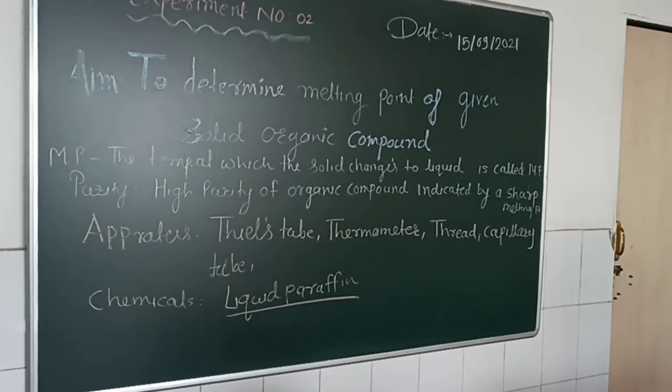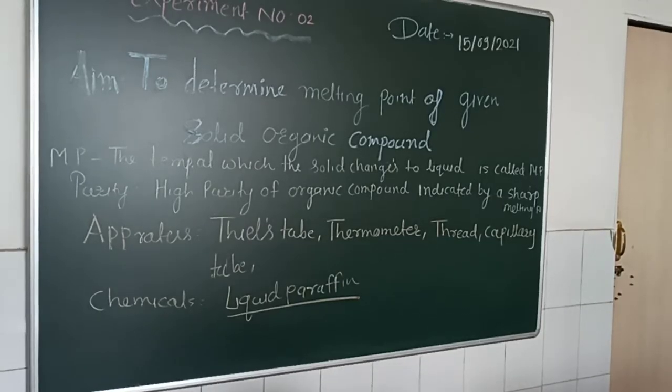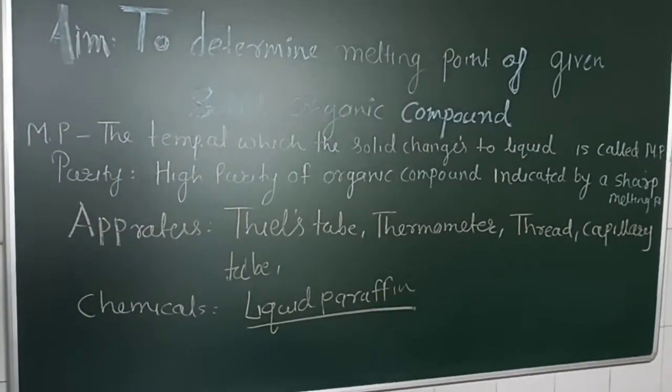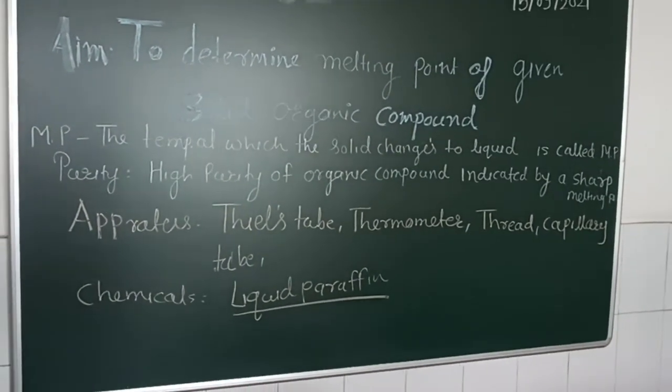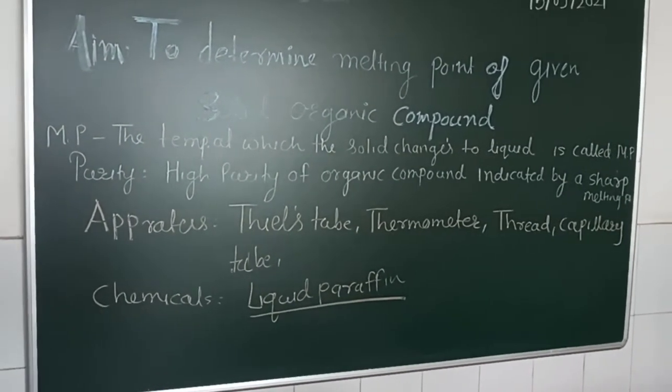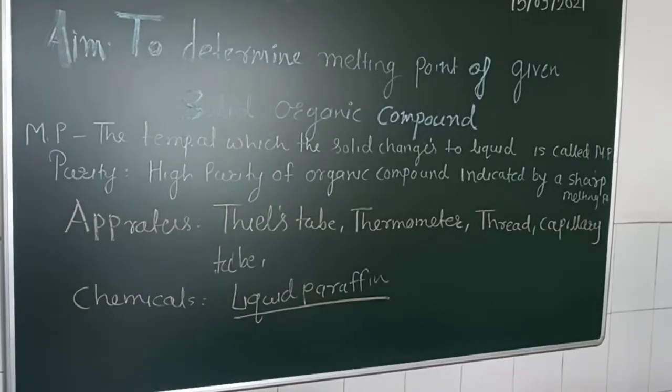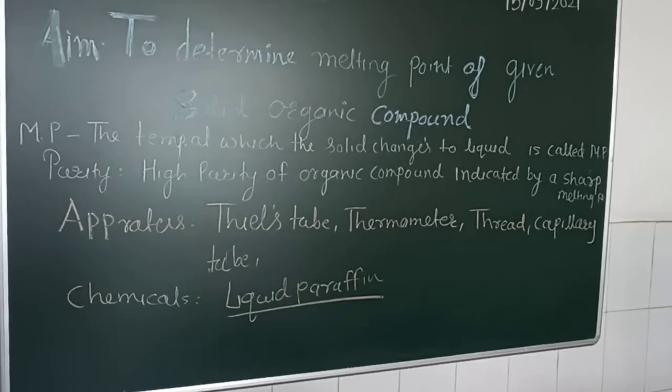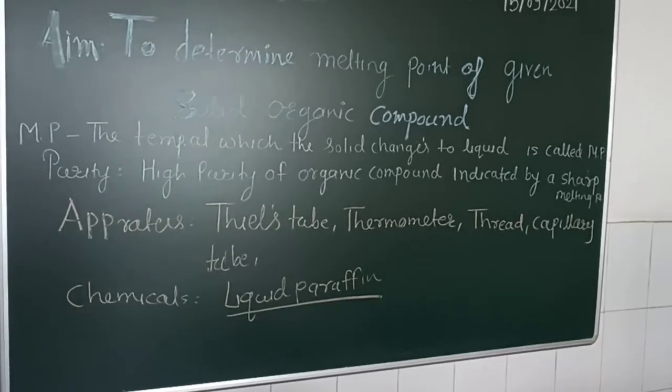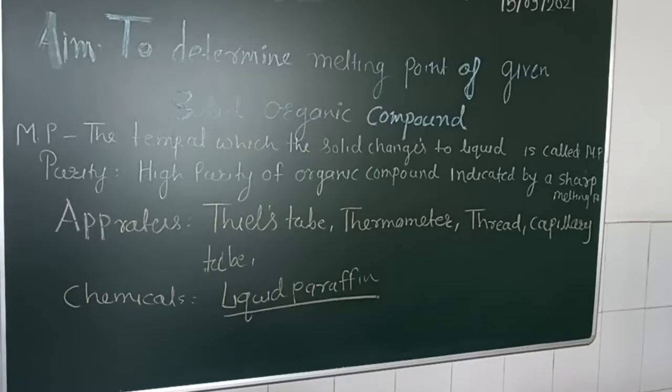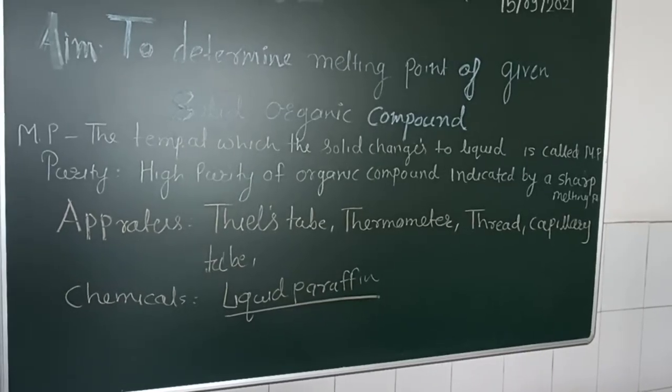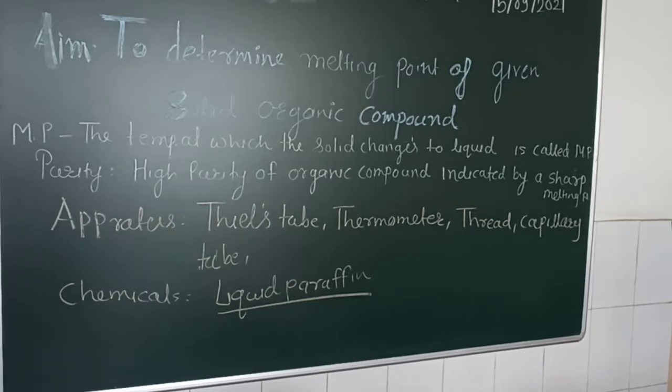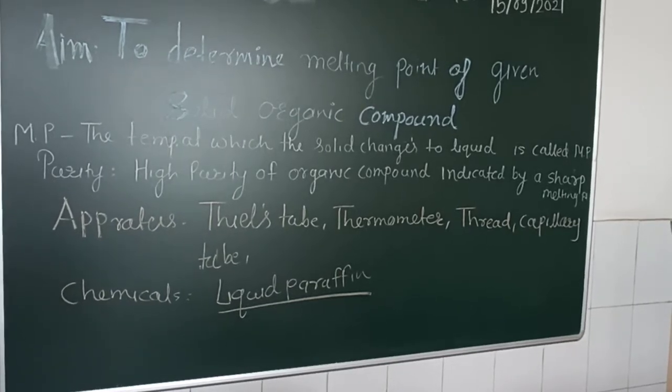One unknown sample is given to you and you have to determine their melting point. For that you must know what is melting point. The melting point is the temperature at which solid changes to liquid. And why there is need to find out melting point? High purity of organic compound indicated by a sharp melting point. If we got a sharp melting point, that means your compound is pure.